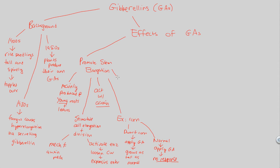Last thing about stem elongation: a good term to know is bolting. GAs directly result in bolting, which is simply the rapid elongation of a floral stalk. When a flower wants to grow upwards and has that stalk region, in order for that to grow correctly upwards, it has to bolt — a physiological response governed by the release and production of GAs. That's our first effect.